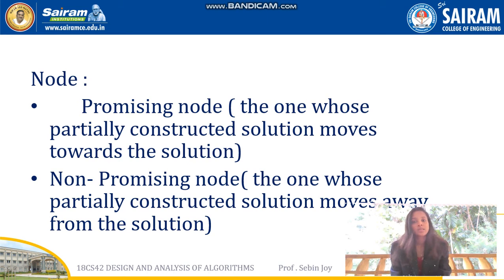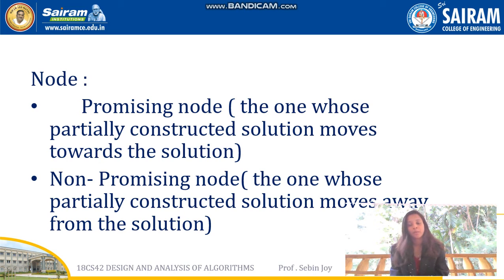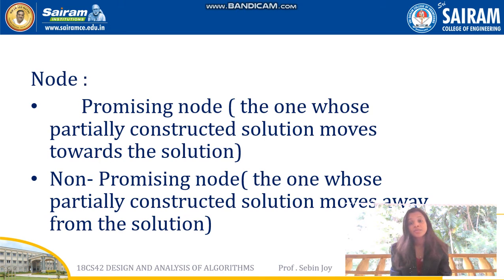Nodes are of two types: promising nodes and non-promising nodes. Promising nodes are those whose partially constructed solution moves towards the solution — they promise that a solution will be reached if that node is included. Non-promising nodes are those whose partially constructed solutions move away from the solution, meaning they do not assure a solution for the problem.